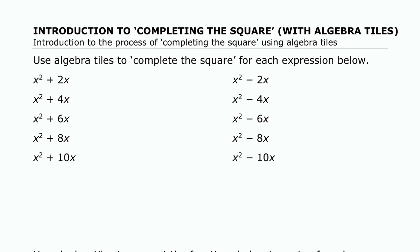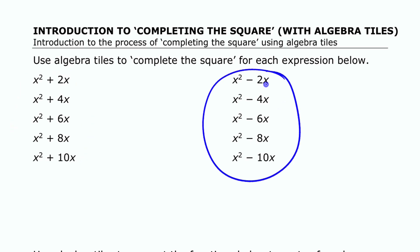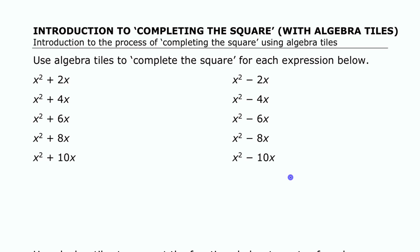We're going to look at this process known as completing the square. The best way to see what it is and why it's called completing the square is to use algebra tiles. We're going to be working with expressions that look like x squared plus some number times x, or x squared minus some number times x. Let's flip over to our algebra tiles screen to do that.